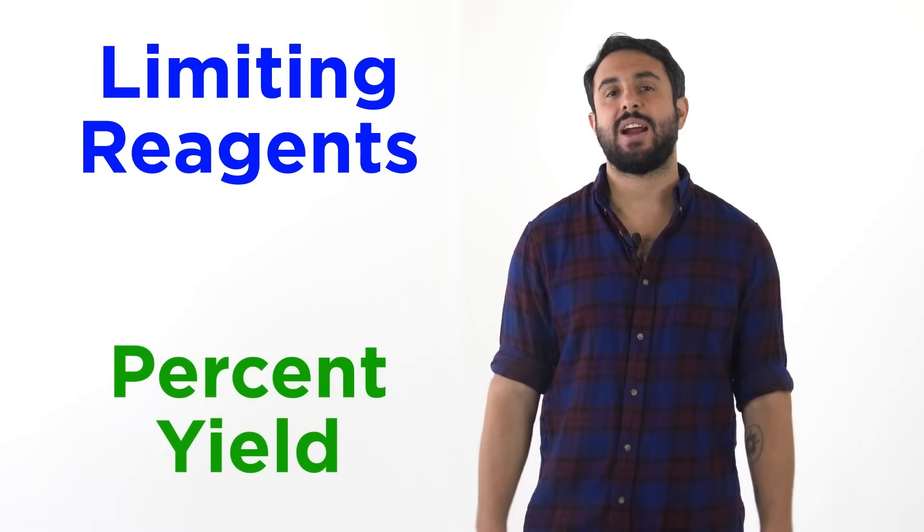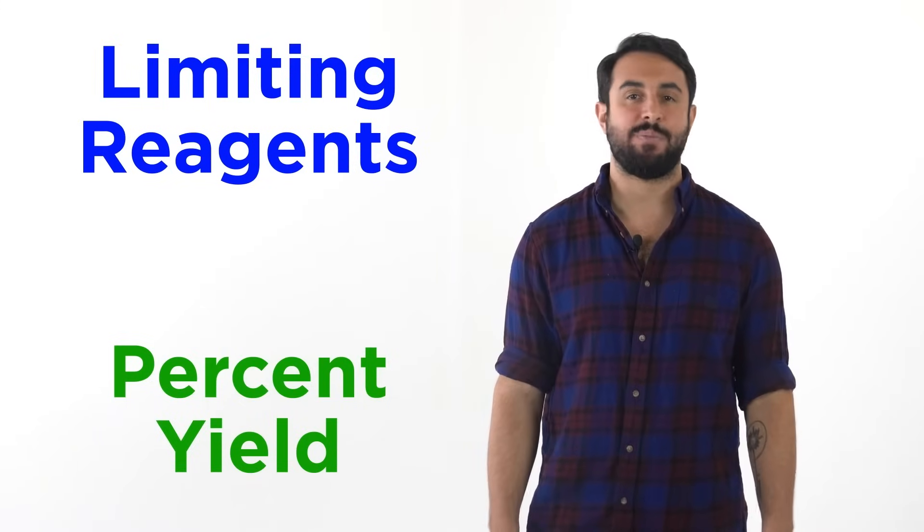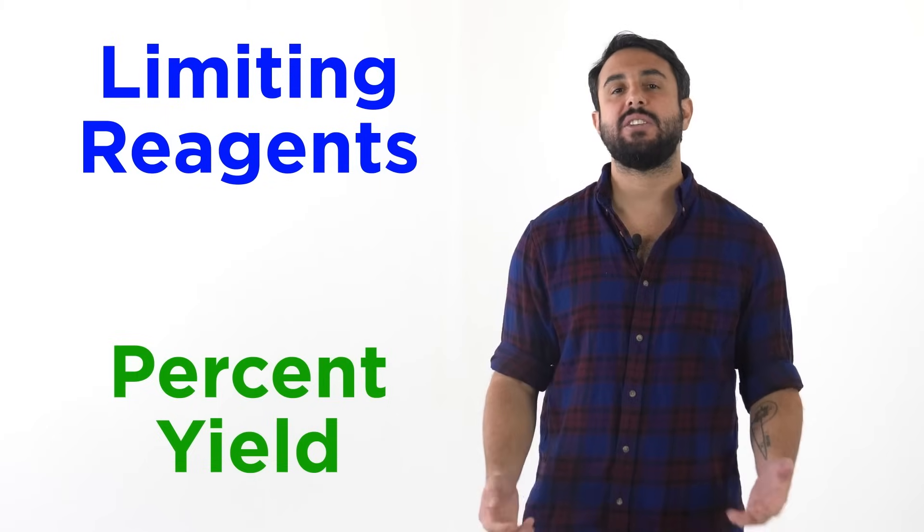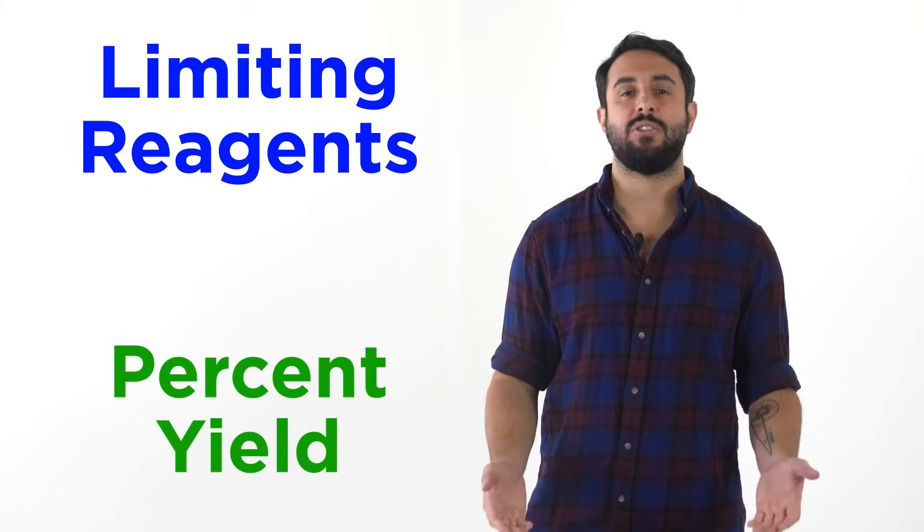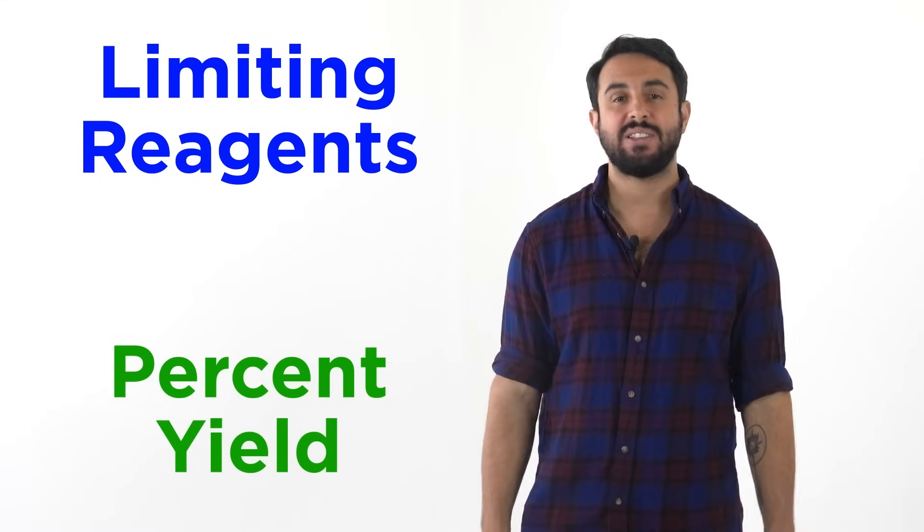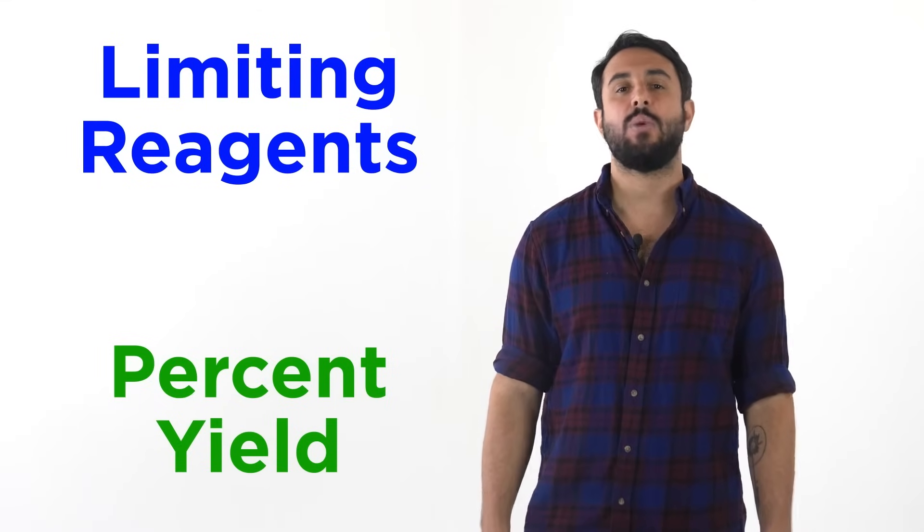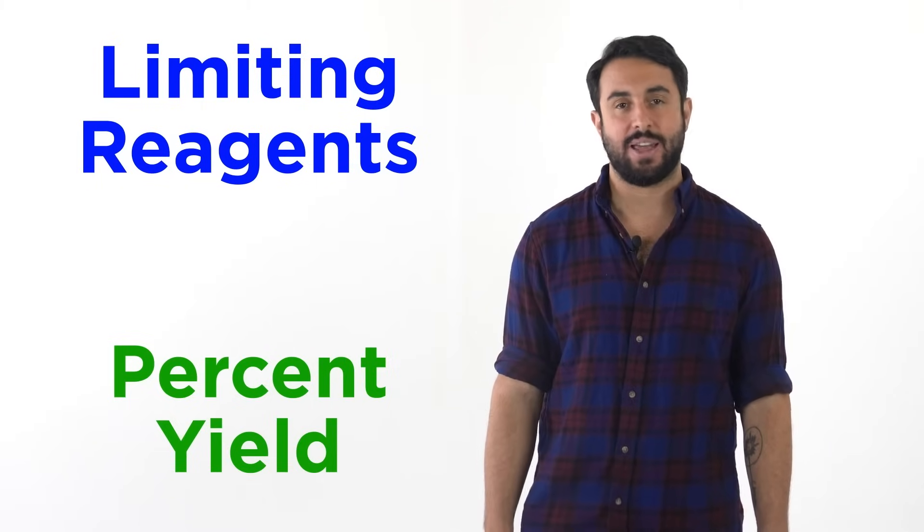And with that we have extended our understanding of stoichiometry to include limiting reagents and percent yield. We have a more realistic understanding of chemical reactions, as we now know that some amount of one or more reactants will always remain in excess once the limiting reagent is used up, and we know how to identify this limiting reagent and perform any relevant calculations.